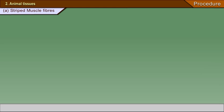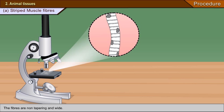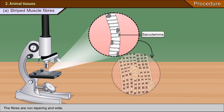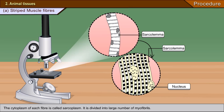Animal tissues. A. Striped muscle fibres: The slide shows a large number of long cylindrical fibres enclosed in a membrane called sarcolemma. The fibres are non-tapering and wide. The fibres are multi-nucleated, and the nuclei lie towards the periphery of the fibres. The cytoplasm of each fibre is called sarcoplasm, which is divided into a large number of myofibrils.